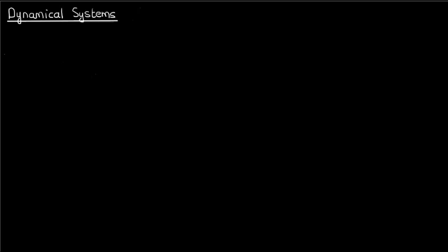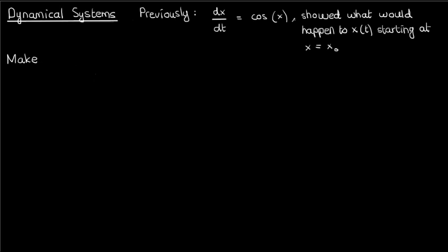This video is going to be a continuation of the previous video on dynamical systems. I've put a link to that video in the description. Recall that in the previous video, we took a differential equation given by dx/dt equals cos(x) and showed what would happen to x if you started at any initial value x₀.